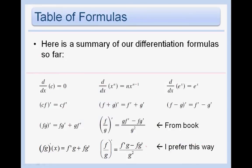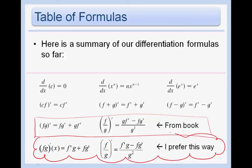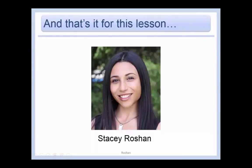Here's just a quick table of formulas we've seen so far. Note that I did put the formulas from the book here, and then I put the ones the way I prefer here. Feel free to use either — they're saying the same thing. The reason I prefer my way is because with the book's notation you might get confused about which one's a product and which one's a quotient, whereas my way you keep the same order and just flip the sign. That's it for this lesson.